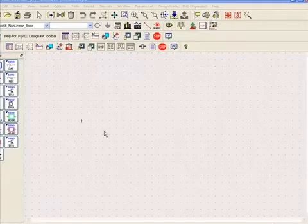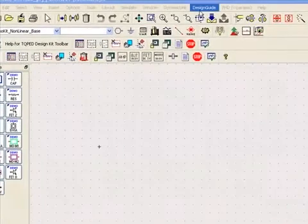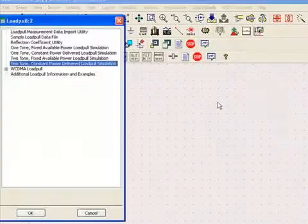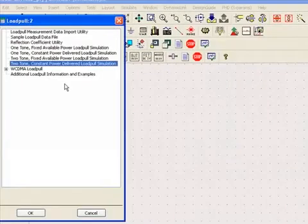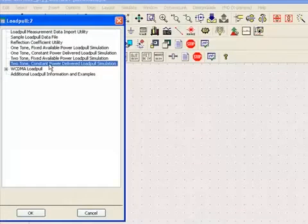To run these two-tone load-pull simulations we select Design Guide Load Pull. This brings up a dialog box and we select two-tone constant power delivered load-pull simulation.